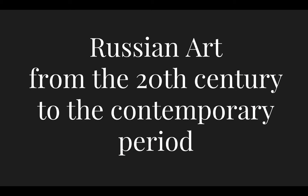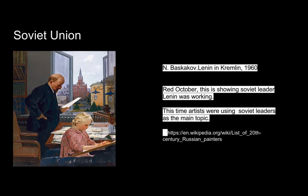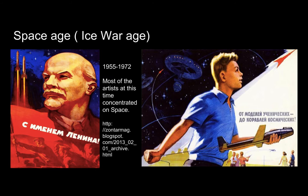We are now going to focus on Russian art from the 20th century to the contemporary period. A heavy influence came from Soviet Union leaders Stalin and Lenin — as seen here, Red October depicts what Soviet leader Lenin was working on. Another heavy influence on contemporary Russian art was the Cold War; artists concentrated heavily on the space age and Russia's competition with the United States to be the first to put a man on the moon.